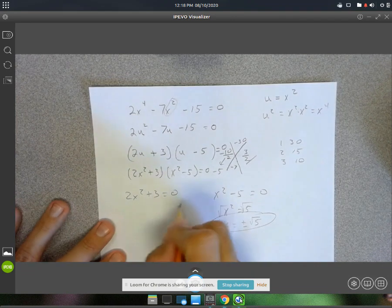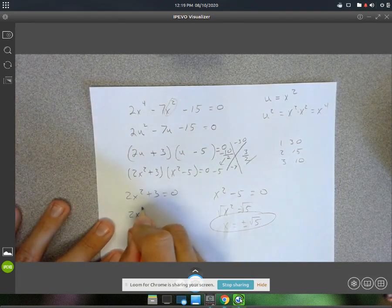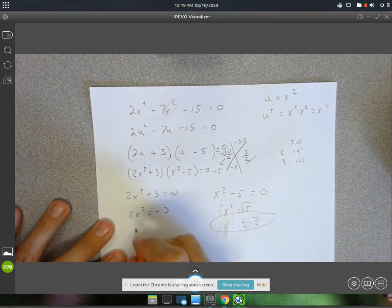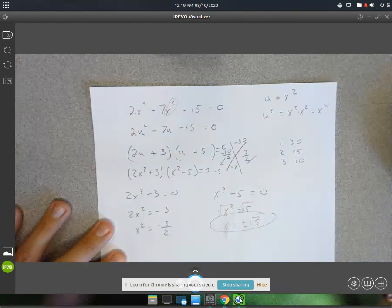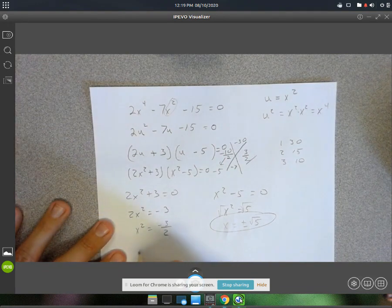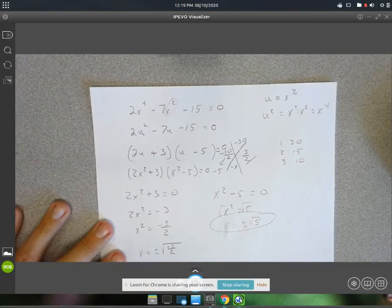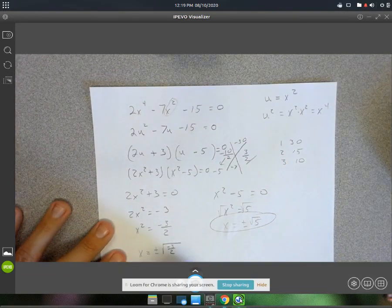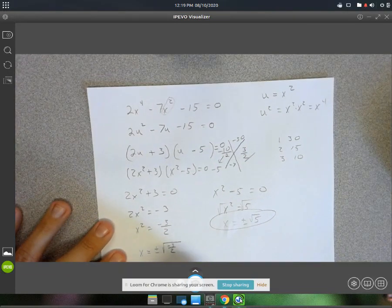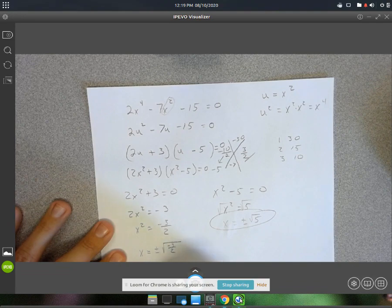Over here, we'll subtract 3. 2x squared equals negative 3. Divide by 2. x squared equals negative 3 over 2. And then square root both sides. So x equals plus or minus root negative 3 over 2. And then we can pull the i out. So x equals plus or minus i root 3 over 2.